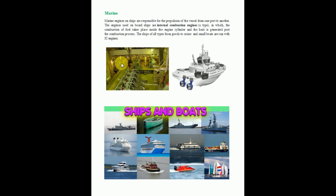The arrangement of engines inside the ship can be seen from this picture. Two blocks of internal combustion engines are connected to a rotor which propels the ship. Different types of ships and boats — heavy capacity ships, smaller capacity ships, and boats — are all run by internal combustion engines for sailing.